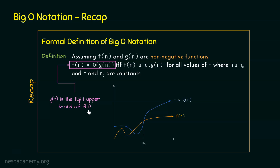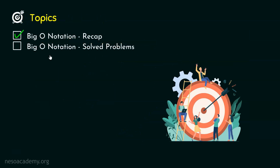I promised we will also understand the meaning of tight upper bound. We will solve some problems and understand the meaning of tight upper bound alongside. Now that we have the quick recap of the formal definition of Big O Notation, let's move ahead and solve some problems.